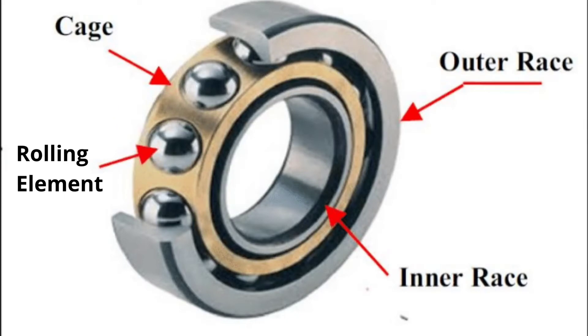A bearing is made up of four basic working parts: outer race or outer ring, inner race or inner ring, rolling elements — either balls or rollers — and a separator or cage.